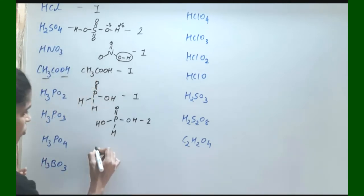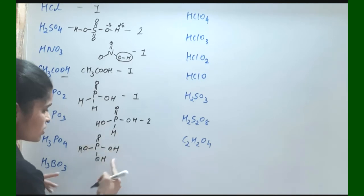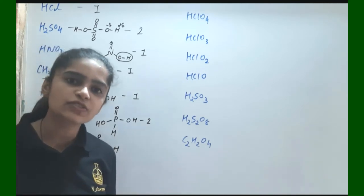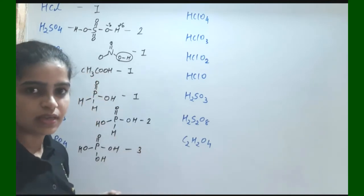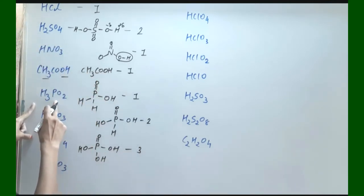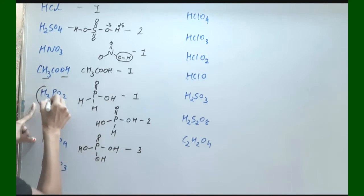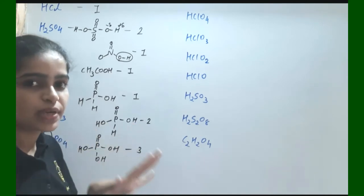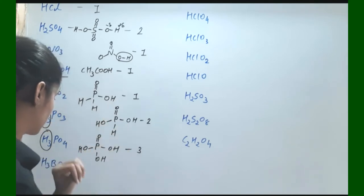Next is H₃PO₄. Its structure is P with double bond O, OH, OH, and OH. All 3 hydrogens are connected to oxygen, and oxygen is more electronegative, so all 3 hydrogens are easily removable. So its basicity is 3. The difference between H₃PO₂, H₃PO₃, and H₃PO₄ is that all have 3 hydrogens, but basicity differs because they have 1 OH, 2 OH, and 3 OH respectively.